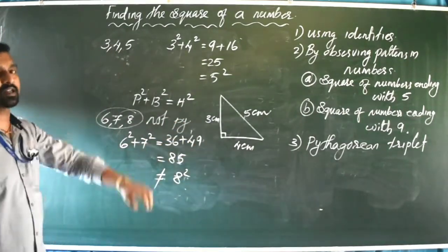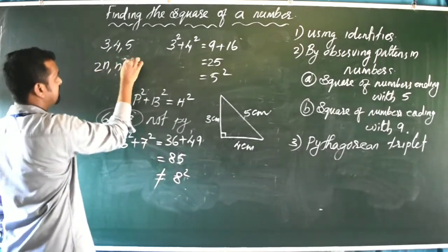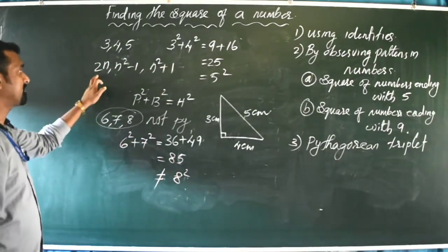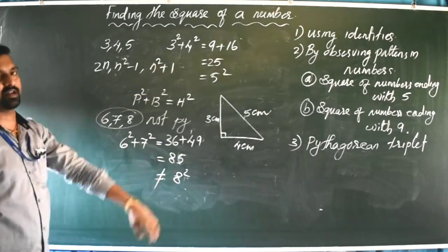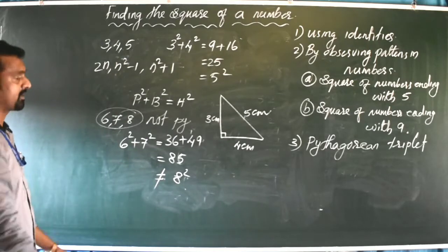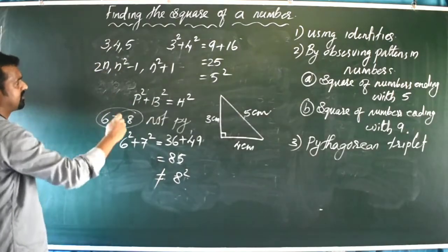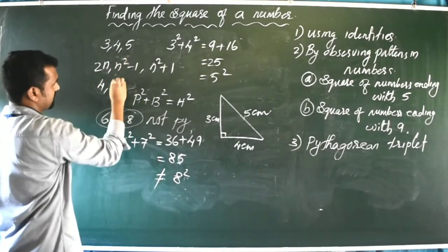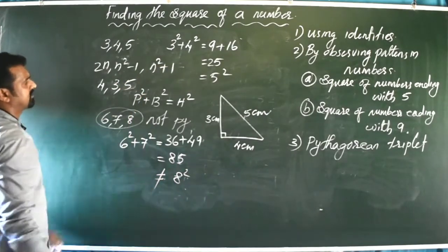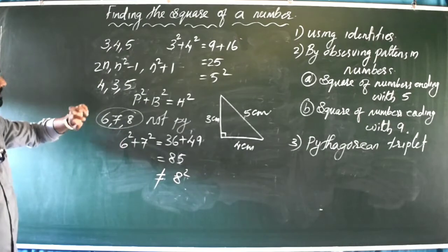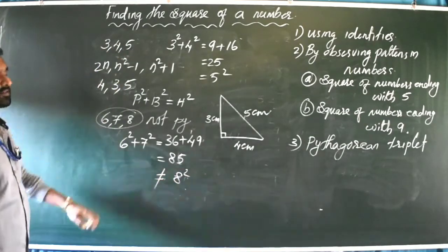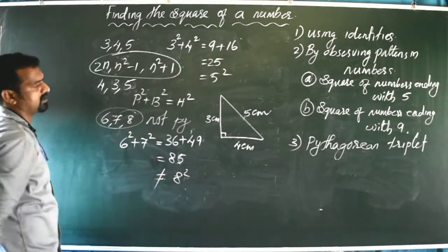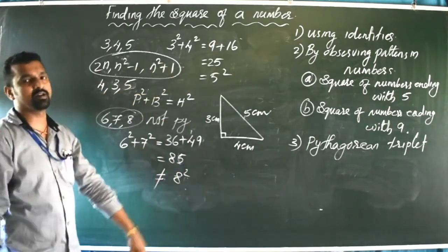Pythagorean triplets are always in the form: 2n, n² - 1, and n² + 1. For example, substituting n = 2: 2×2 = 4, 2²-1 = 3, 2²+1 = 5. So 3, 4, 5 is the first Pythagorean triplet. Always remember this formula: 2n, n²-1, n²+1.